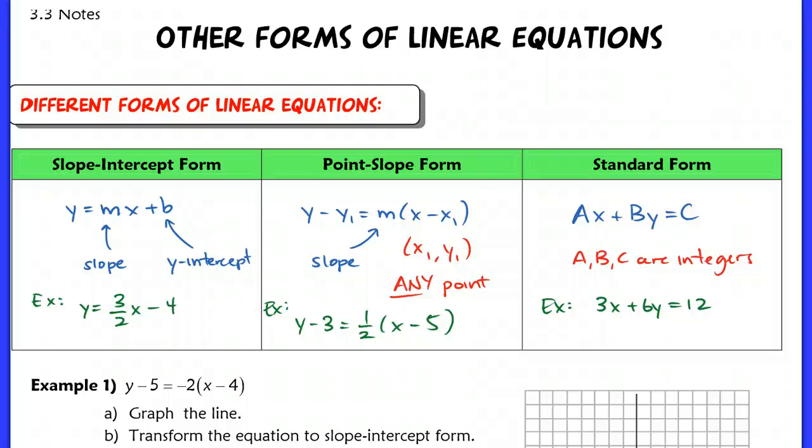These are notes for section 3.3. We're going to be talking about all forms of linear equations. So here we've got three different forms: slope-intercept form, point-slope form, and standard form. What I want you to do is pause it and then make sure you write down all this information in your notes. It's going to help you probably on a quiz or a pop quiz kind of thing.